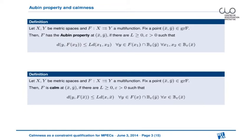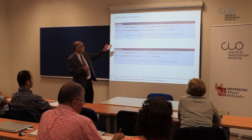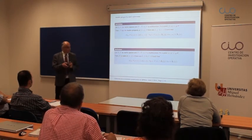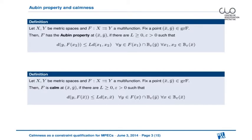It turns out for many purposes the Aubin property has been used classically as a sufficient condition, but it turns out for many purposes it is sufficient to work with the weaker property, the so-called calmness. Calmness comes in a natural way from the Aubin property if you fix one of these two arguments as the nominal point x-bar. So you just compare the excess of one perturbed image of the multifunction over the nominal image and ask for such a local Lipschitz behavior. This is of course a much weaker property.